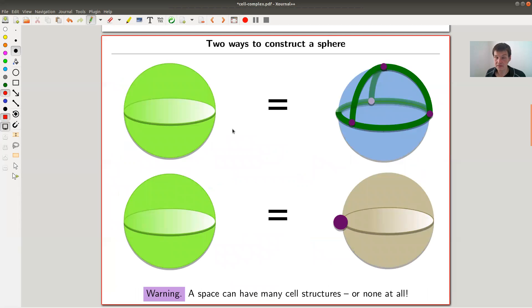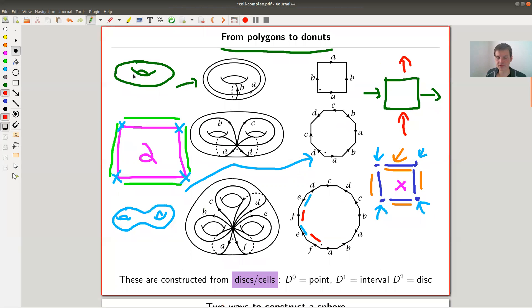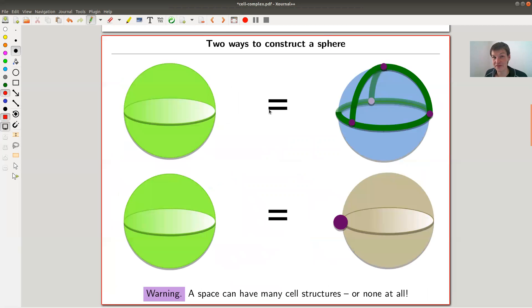Let me show you how to construct a sphere. This was the torus, the double torus, the triple torus, the four-hole torus. How to construct a zero-hole torus, the sphere?